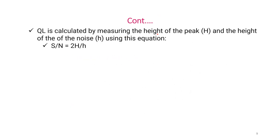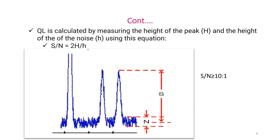QL is calculated by measuring the height of the peak (capital H) and the height of the noise (small h) using this equation: S/N = 2 × H ÷ h — the same as discussed for detection limit. S/N should be greater than or equal to 10:1. Capital H is the height of the signal, small h is the height of the noise, and using this formula, S/N and QL are calculated.